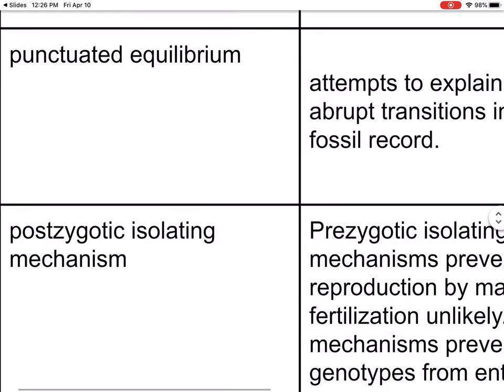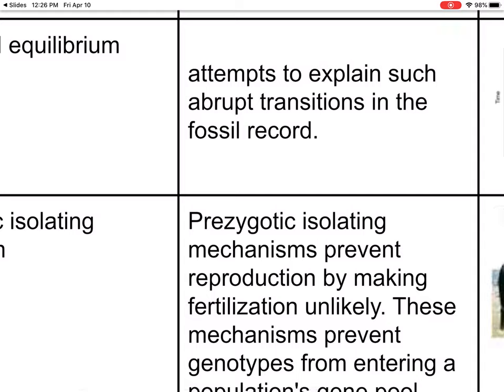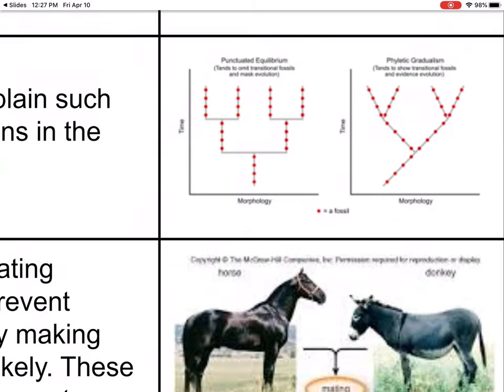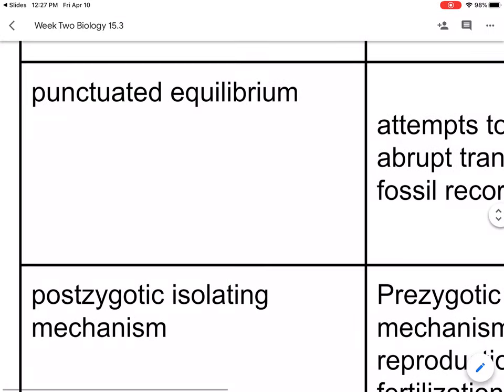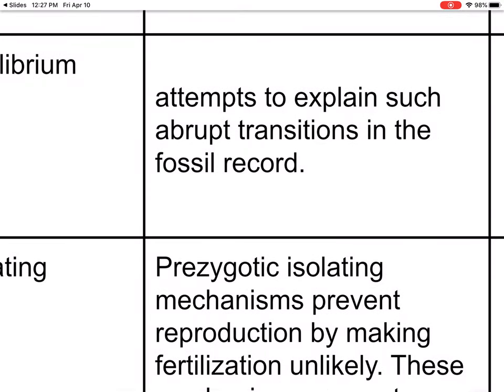Punctuated equilibrium attempts to explain abrupt transitions in the fossil record — abrupt transition means big changes, something big just happened. Think of punctuated like a period or exclamation point, and equilibrium has to do with a balance. So you're looking at fossil records — those layers of earth — and then all of a sudden you see a big change.